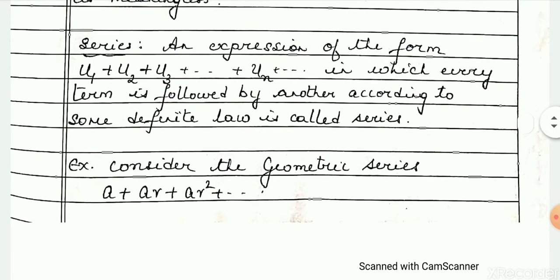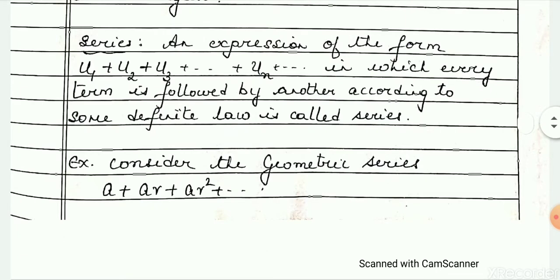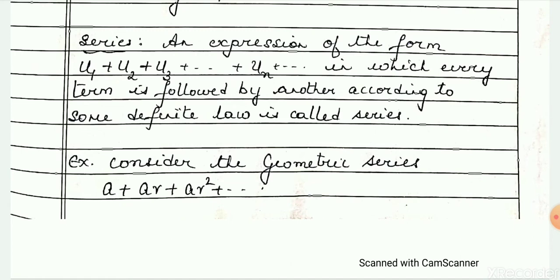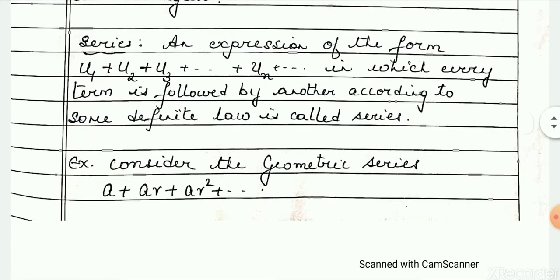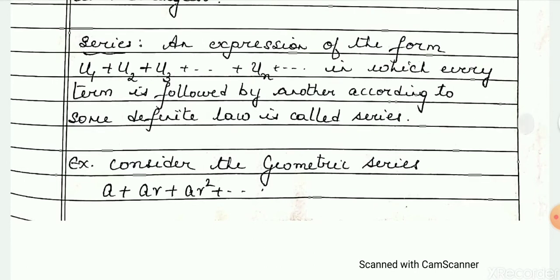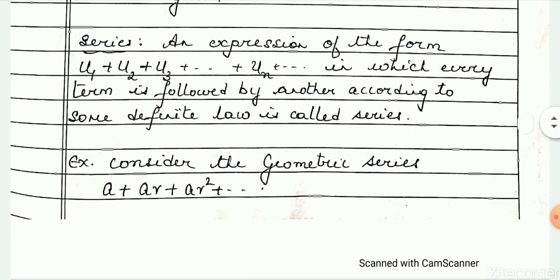What is a sequence? A sequence is a succession of numbers or terms formed according to some definite rule. The nth term in a sequence is denoted by u_n.